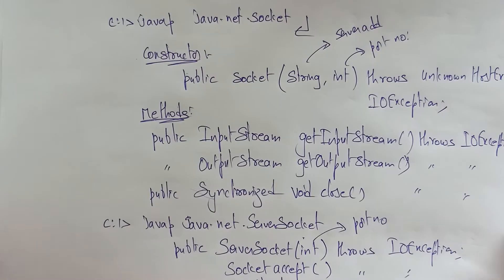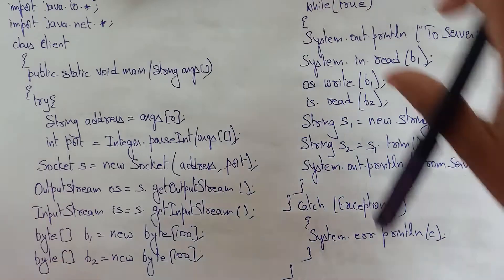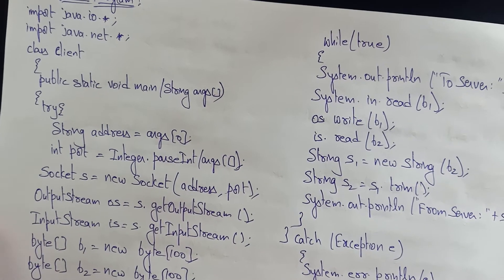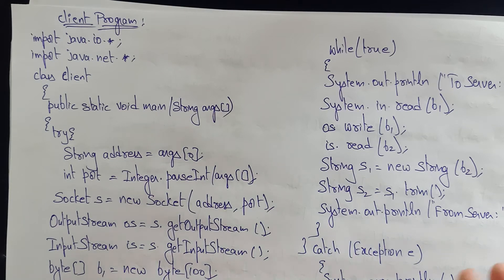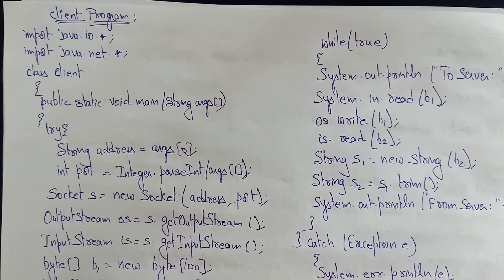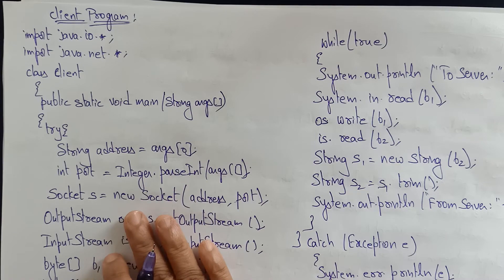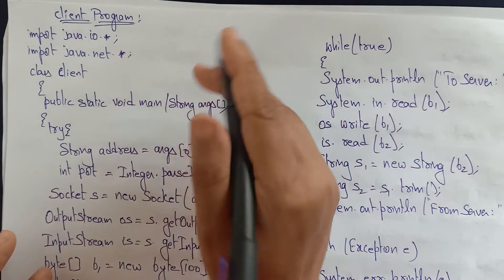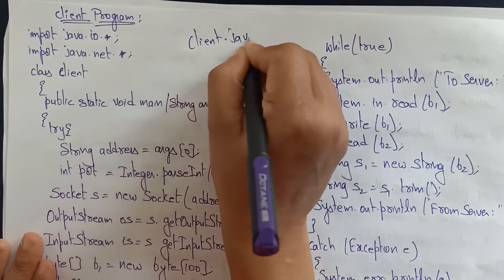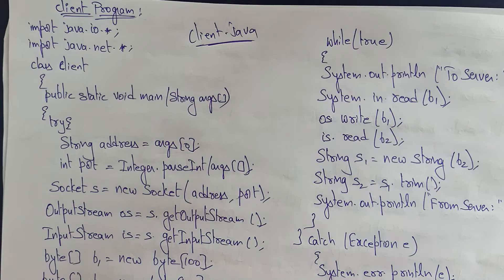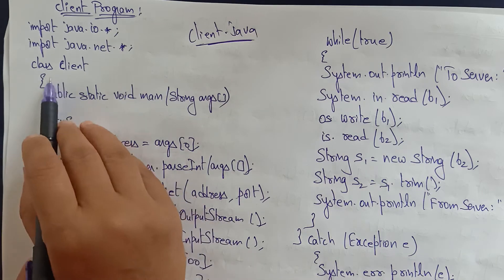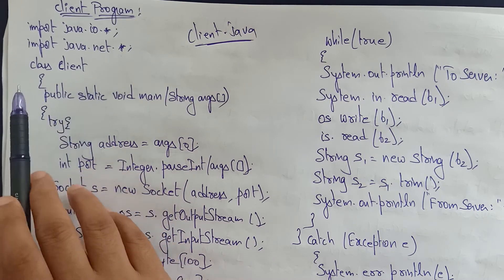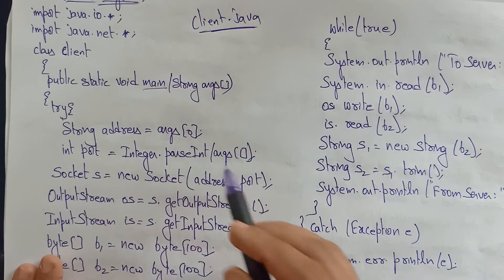Now let's work on the program. Write this program on your Eclipse IDE or Notepad++. You have to write both the client program and the server program. Create client.java for the client program and server.java for the server program. First I'll explain client.java — save this program as client.java. Try to implement the steps I explained in the previous video.